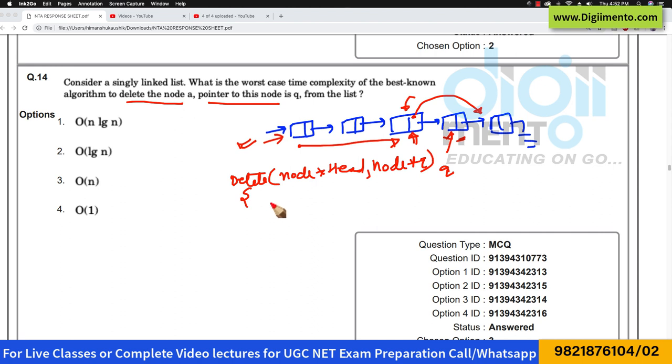So you have to write something like this: node star P, take a temporary pointer, so this temporary pointer is also pointing here. Then you have to write while P arrow next is not equal to Q, that means while this part is not pointing to that specific node.